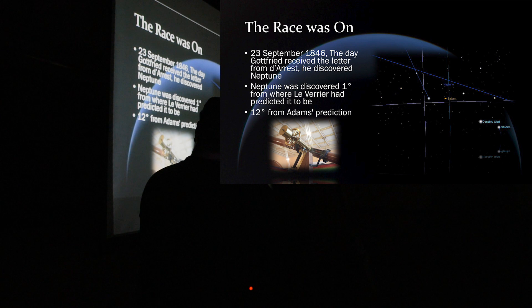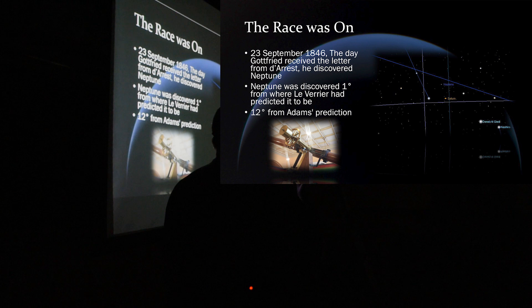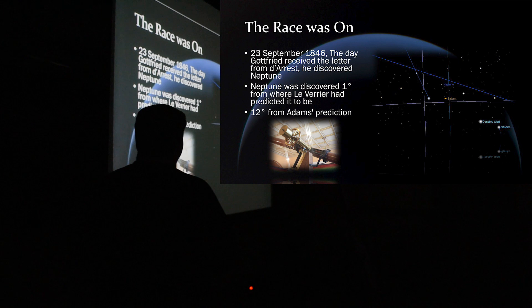And this is the actual telescope that was used. It's not at the Berlin Observatory anymore. It's in a museum at Munich. I believe it's at Munich. This is the actual, they call it the Neptune Telescope. That's the telescope with a refractor that discovered Neptune.